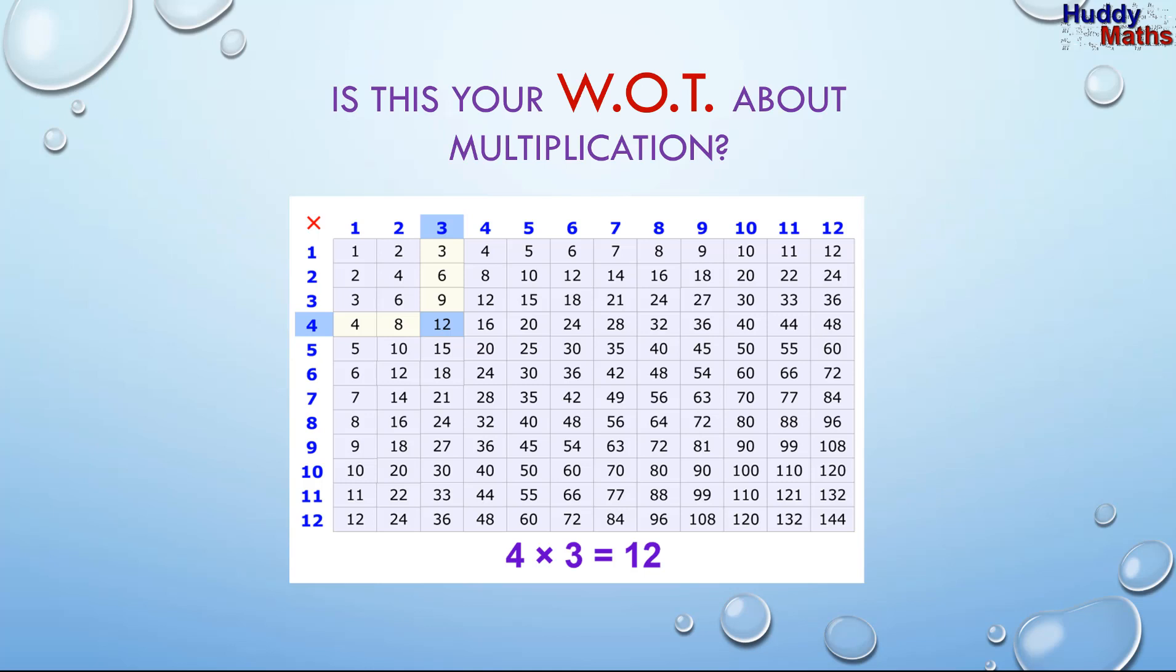Okay, is this your way of thinking about multiplication? W-O-T, way of thinking about multiplication. I think for many of us, that's the way it started. Four threes are twelve. Is that true? Four times three is twelve. Yeah, and teachers said, yep, and they were right. You should know your tables up to twelve twelves. That can be very useful. Do you remember that stuff?